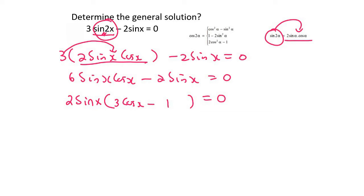And so we can now say that, therefore, 2sinx equals 0, or 3cosx minus 1 equals to 0. Here on the left you can divide by 2, and so you're just going to end up with sinx equals to 0. And then for this one you're going to end up with 3cosx equals to 1, divide by 3, and end up with a third.